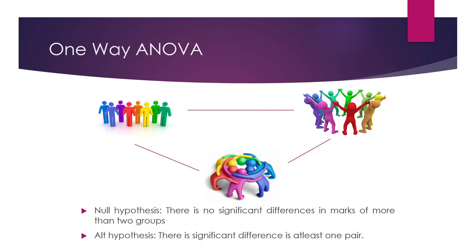For example, using the word marks: there is no significant difference in marks of more than two groups. But the alternative hypothesis is a little bit tricky — there is a significant difference in at least one pair. Now, how to conduct the parametric test, that is t-test, in R — let's see.